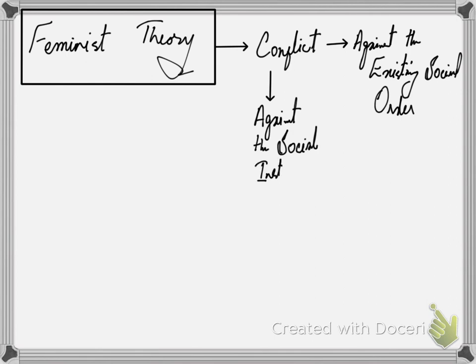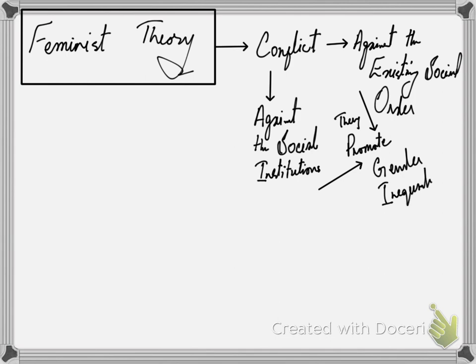اگر میں اس چیز کی reasoning کی بات کروں تو یہ لوگ against the existing social order ہوتے ہیں اور against the social institutions بھی ہوتے ہیں. Because ان کے نزدیک جو آپ کے social institutions ہیں اور social order ہے، جو society کی functioning ہے، وہ چیزیں certain things کو promote کرتی ہیں. According to the feminist theory, they are against the existing social order and social institutions — وہ ان دونوں چیزوں کو oppose کرتے ہیں.